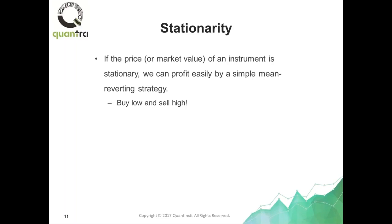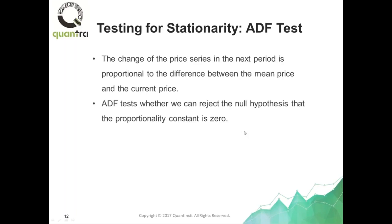Now if a price series that we trade is like that — stationary — it is obvious that we can trade it quite simply by a mean-reversion strategy. A simple mean-reversion strategy: you must have heard of it — it's just buy low and sell high, and vice versa: short it when it's high and buy to cover when it's low. Just doing it over and over again will earn you unlimited profit.